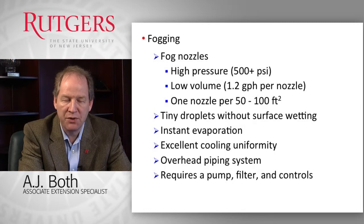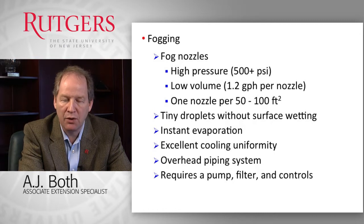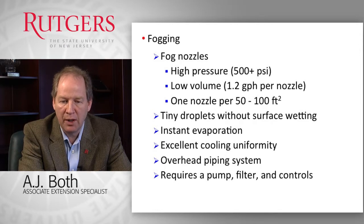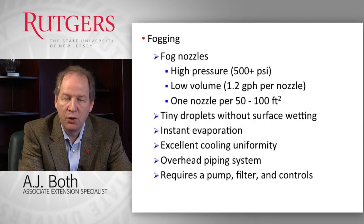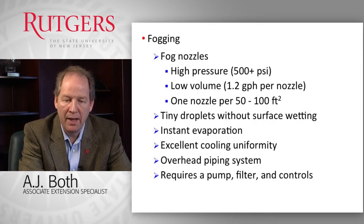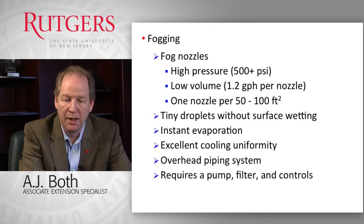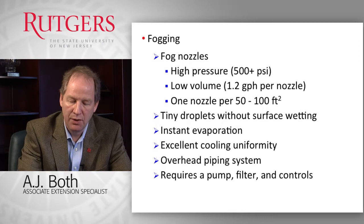Fogging systems use high pressures — 500 plus psi — with perhaps as little as 1.2 gallons per hour per nozzle of water flow. Similar to the misting system, we put one nozzle for every 50 to 100 square feet of growing area. This provides excellent cooling uniformity, as the nozzles are placed throughout the greenhouse environment, making it more uniform than a pad and fan system. An overhead plumbing system is required, along with a high-pressure pump. Filters are very critical because the opening sizes are very small, so you need very clean water, plus controls to operate the fogging system.